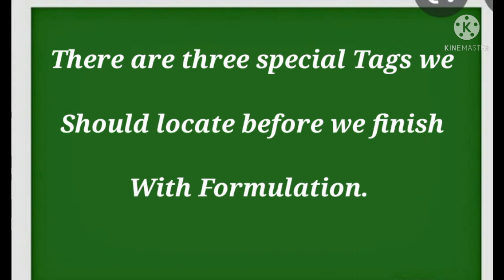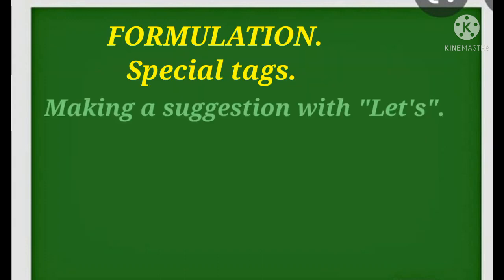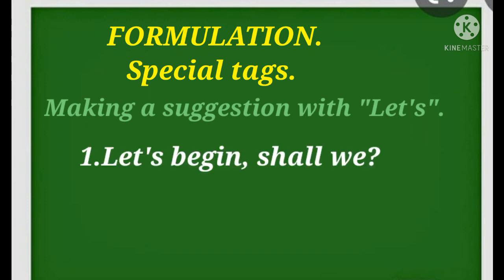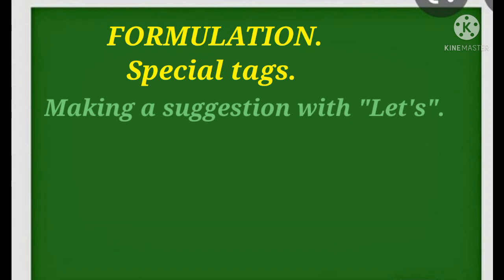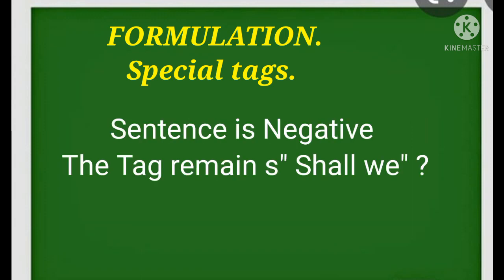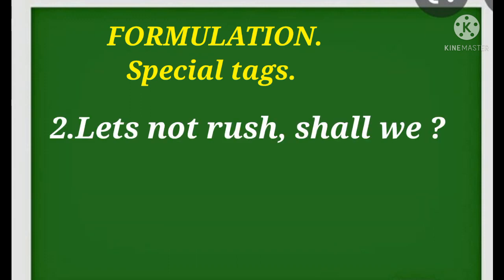There are three special tags we should look at before we finish with formulation. The first one is the tag that follows the expression let's. When you make a suggestion with let's, if you wanted to add a tag, you use shall we. Let's begin, shall we? Even if your sentence is negative, the tag remains shall we. Let's not rush, shall we?